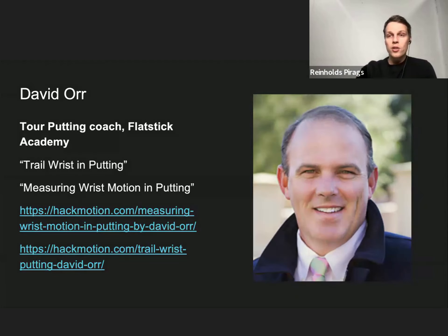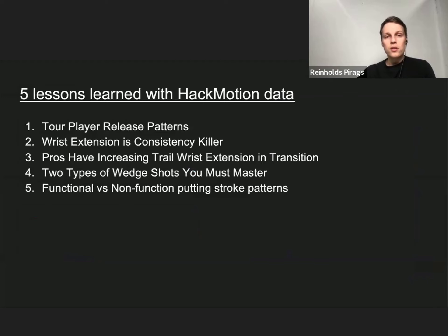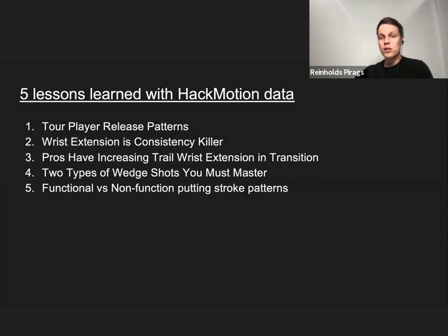That wraps it up — five lessons learned with HackMotion data: First, different tour player release patterns — understand yours and work on it. Second, wrist extension as a consistency killer, because without control over extension it's very hard to control your club face. Third, pros have increasing trail wrist extension in transition. Fourth, two types of wedge shots you must master — both sides of the spin mountain. And fifth, functional versus non-functional putting stroke patterns — measure your stroke, even pro players have issues.